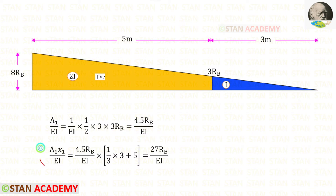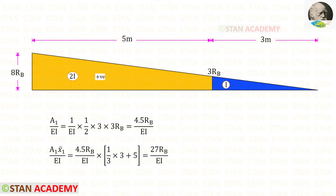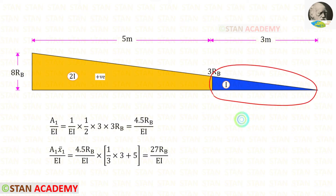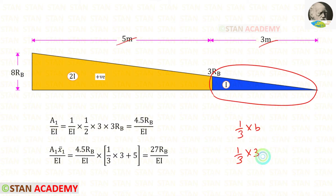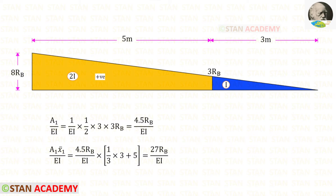Now let us find Area 1 times x̄1 upon EI. We have already calculated Area 1 upon EI. We only need to find x̄1 — the centroid distance about the left side. For this triangle, the centroid distance towards the left is (1/3) into breadth, where breadth is 3. So (1/3)×3 plus the remaining distance of 5 gives us the centroid. For Area 1 × x̄1 upon EI, we get 27Rb upon EI.